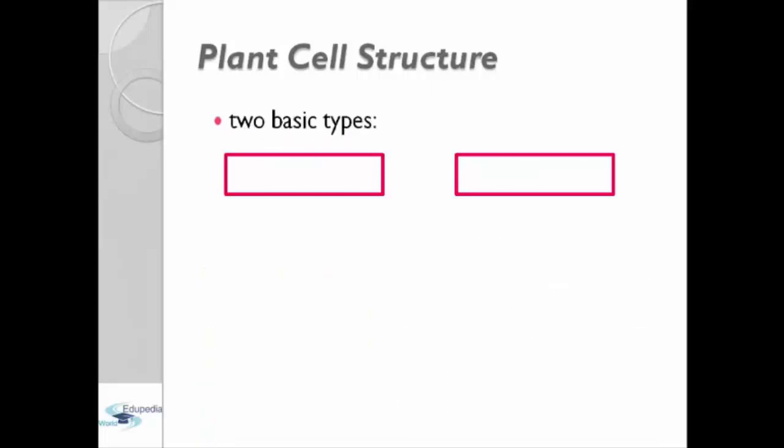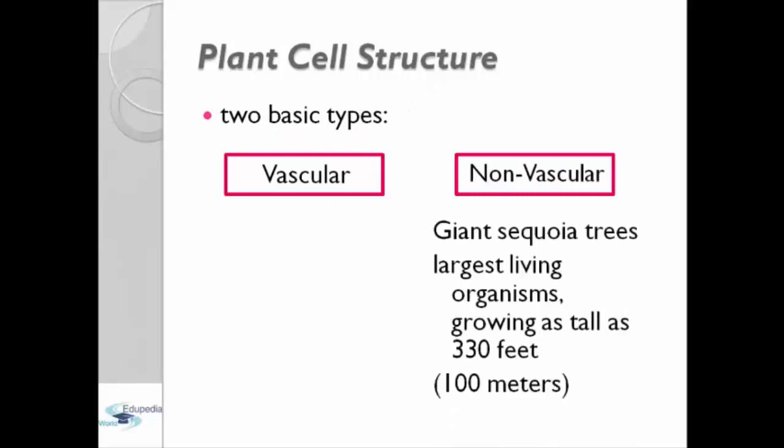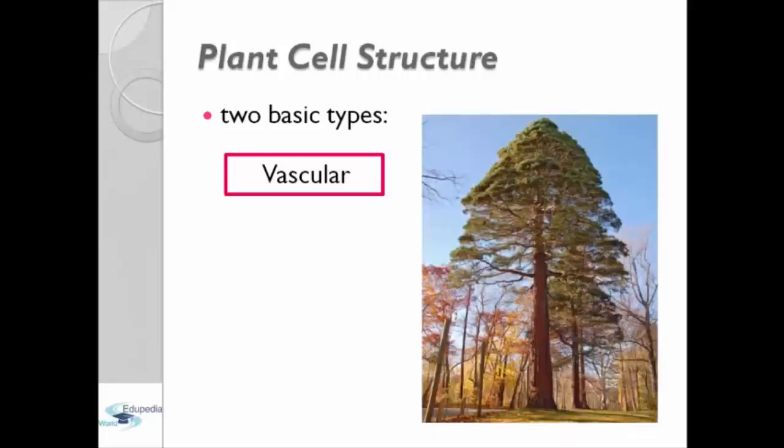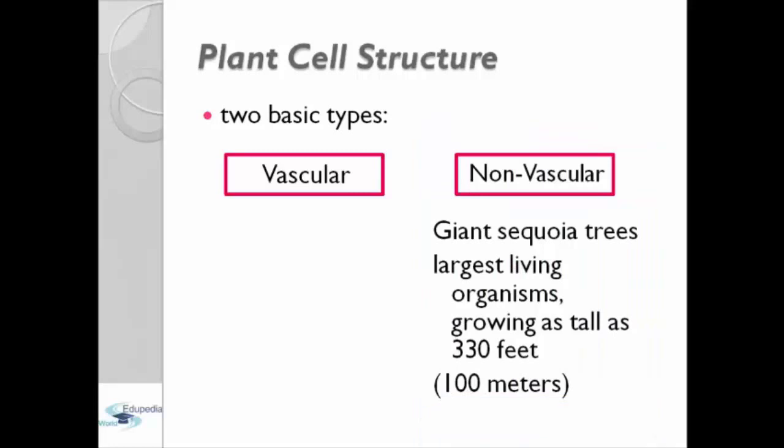For example, for non-vascular we have the giant sequoia trees which is considered as the largest living organisms because it usually grow as tall as 330 feet or 100 meters. For vascular we have the celery and grass as an example.